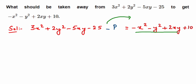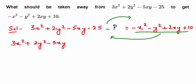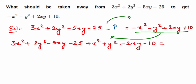The first expression 3x² + 2y² - 5xy - 25 remains the same. Now transposing the right-hand side terms: -x² becomes +x², -y² becomes +y², +2xy becomes -2xy, and +10 becomes -10. Then minus P transposed to the other side becomes plus P.